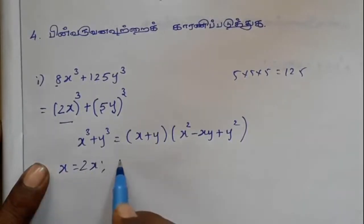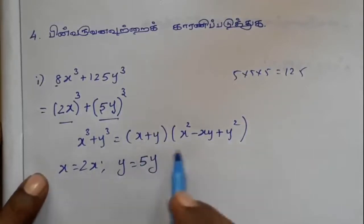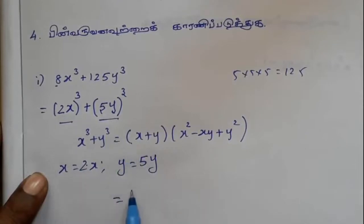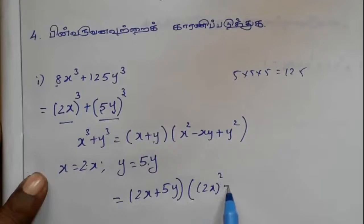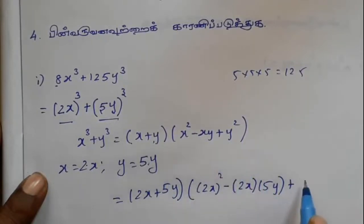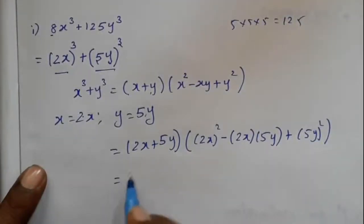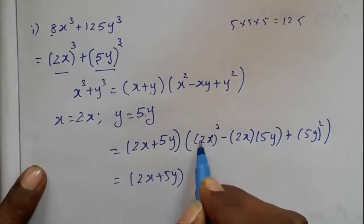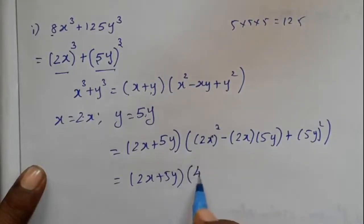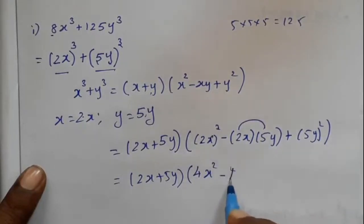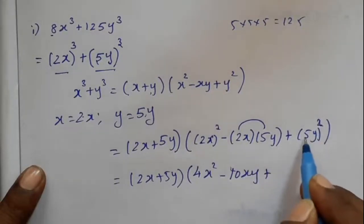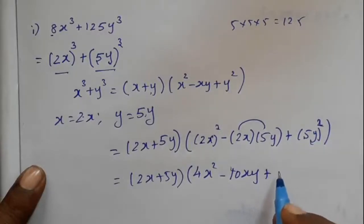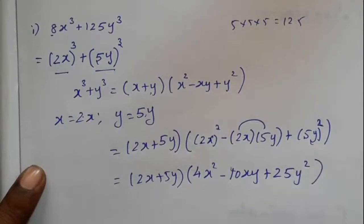2x plus y is equal to 5y. 2x plus y plus 5y. x equals 2x whole squared minus x into y. 5y plus y equals 5y whole squared. Now we have 2x plus 5y. We can now let the square of 2x equal 4x squared minus 2x equals 5, equals 25y squared. This is the answer to the second sum.